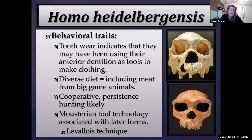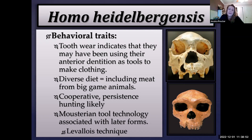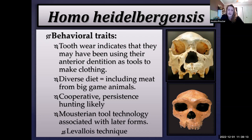Heidelbergensis had a very diverse diet, starting to include meat from large game animals and becoming much more omnivorous. They were still eating vegetables, fruit, vegetation, insects, and tubers whenever available, but also including meat. Heidelbergensis likely engaged in cooperative persistence hunting, just like modern-day hunter-gatherers — such as the Bushman hunt we watched in Tuesday's lecture. It has been hypothesized that heidelbergensis may have hunted in exactly that way.